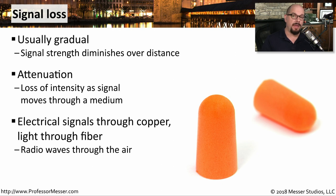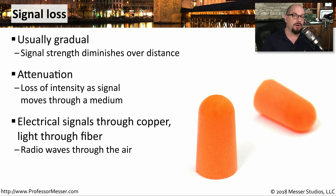If these are copper cables, you'll have electrical signals that will attenuate as they move through the cable. If it's a fiber connection, the same thing happens with light. And if these are radio waves on a wireless network, you'll have attenuation as you move farther away from the access point.